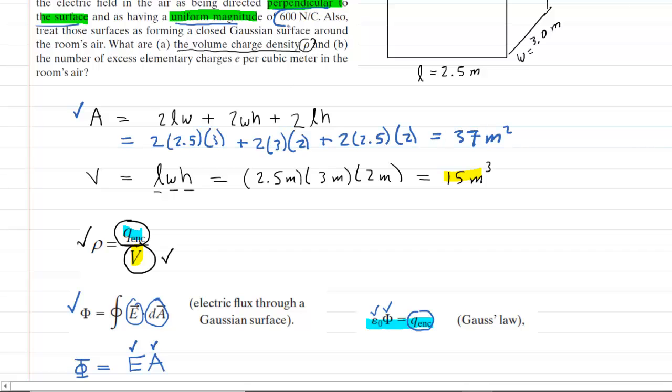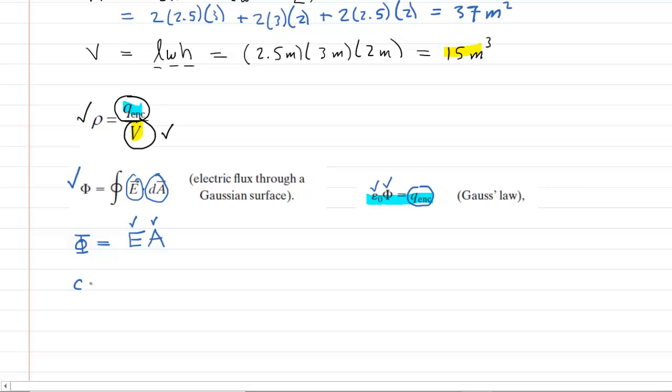The question gives us right up there the total electric field magnitude. It's 600 newtons per coulomb. So we'll come down here and we will plug in that electric field along with that area. And when we multiply these together, we will see that the total electric flux is 22,200. And then this is newton meters squared per coulomb.